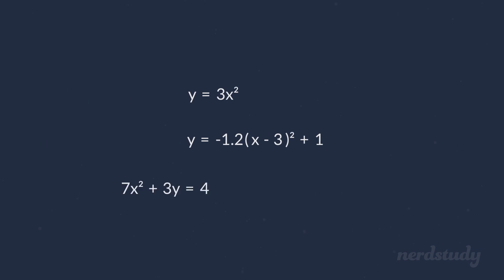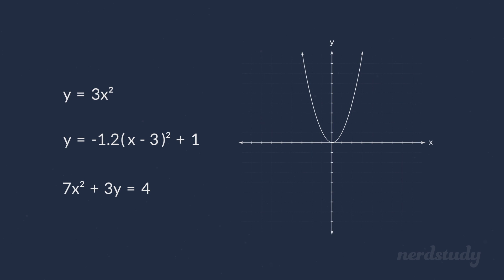So, suppose I gave you these equations. Would you be able to tell me which graph opens up, and which one opens down? Also, would you be able to tell me which one has a vertex that is a minimum, and which one has a vertex that's a maximum?